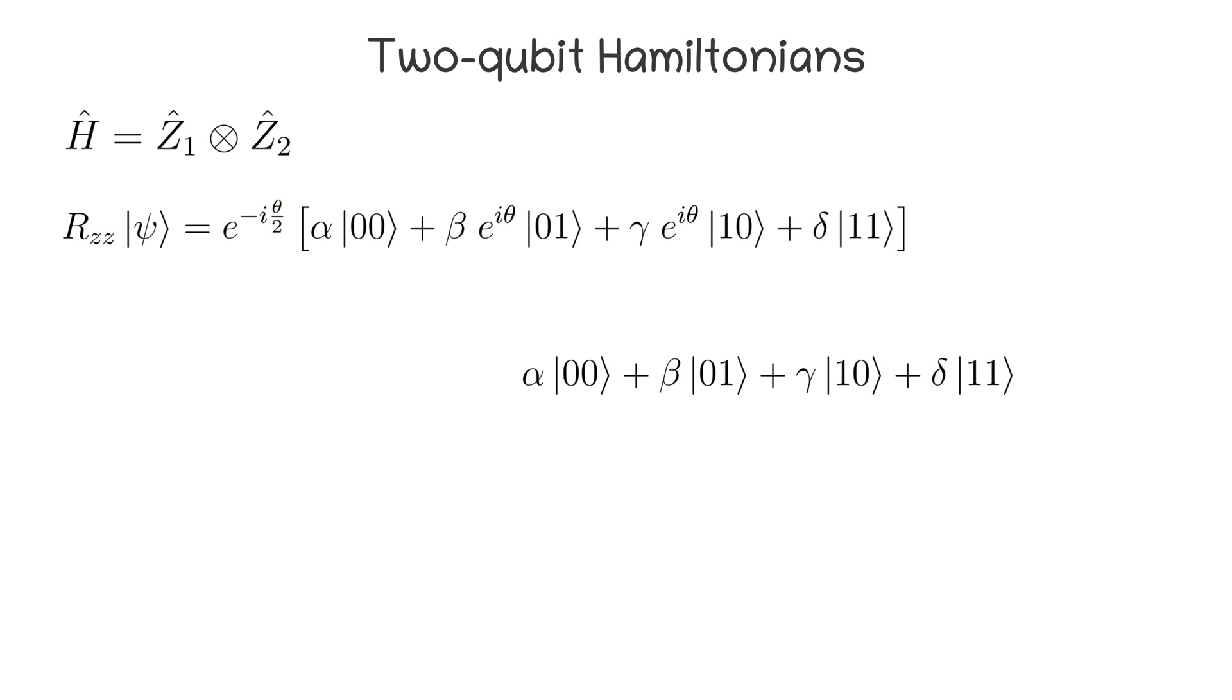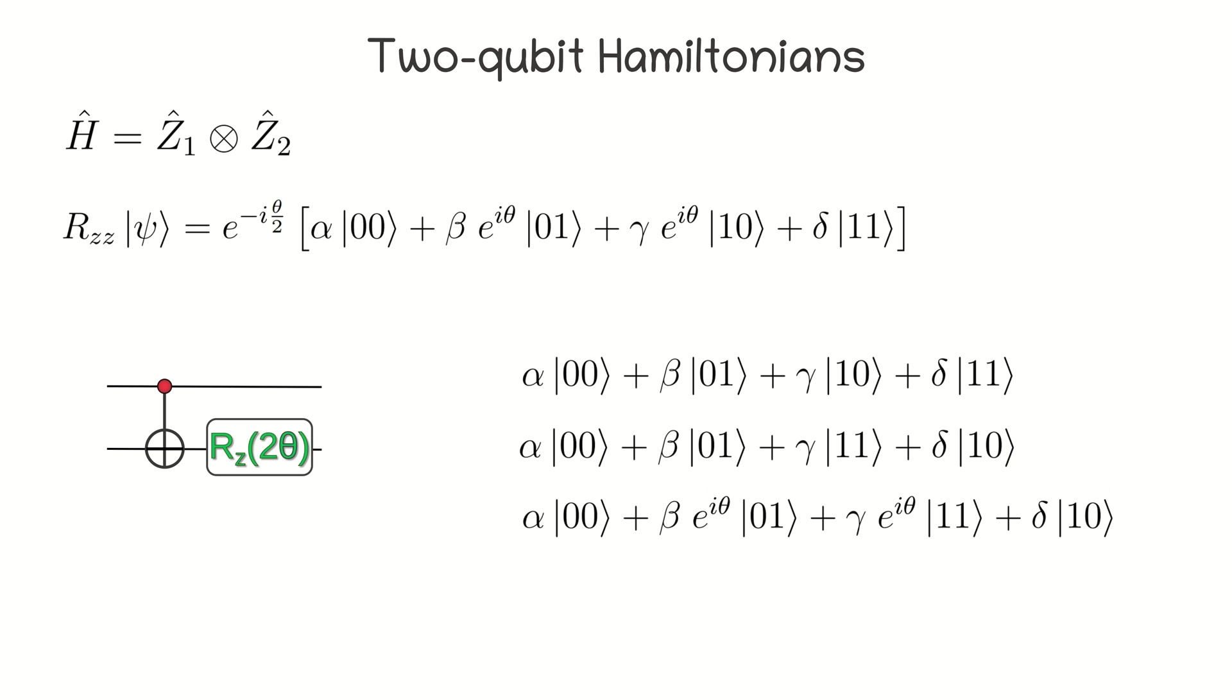So, this is our initial state. First, we classically compute the parity using the CNOT gate. The result is stored in the second qubit. If the parity is even, its value is 0 and 1 otherwise. Afterwards, we apply an appropriate phase shift conditioned on the parity using Rz gate. Finally, we uncompute the parity bringing the second qubit back to its original state.